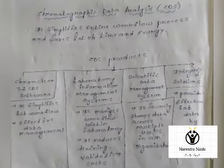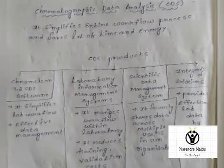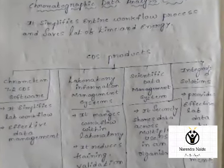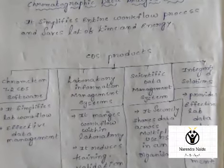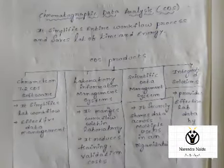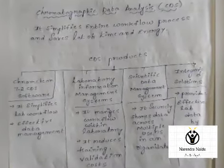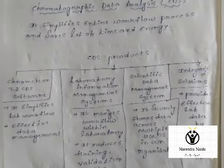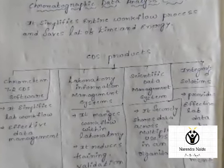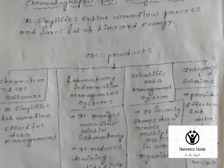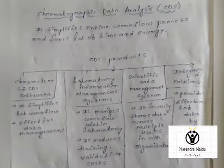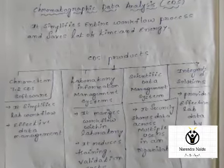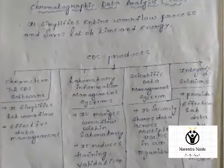The next one is the Scientific Data Management System. This system securely shares data across multiple users — it shares information among different users in an organization. For example, in a college, information is shared between different departments using this scientific data management system.